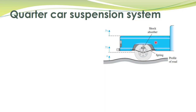We know that the body of a car is connected to its tires through a suspension system. The suspension system consists of a spring and a damper. One of the objectives of this suspension system is to reduce the effects of road irregularities on the passengers. To study this effect, we want to obtain the mathematical model of this particular system. Here we have shown the simplest case where only one tire of a car is shown — a full car has four tires. Therefore, this particular model is called a quarter car system.